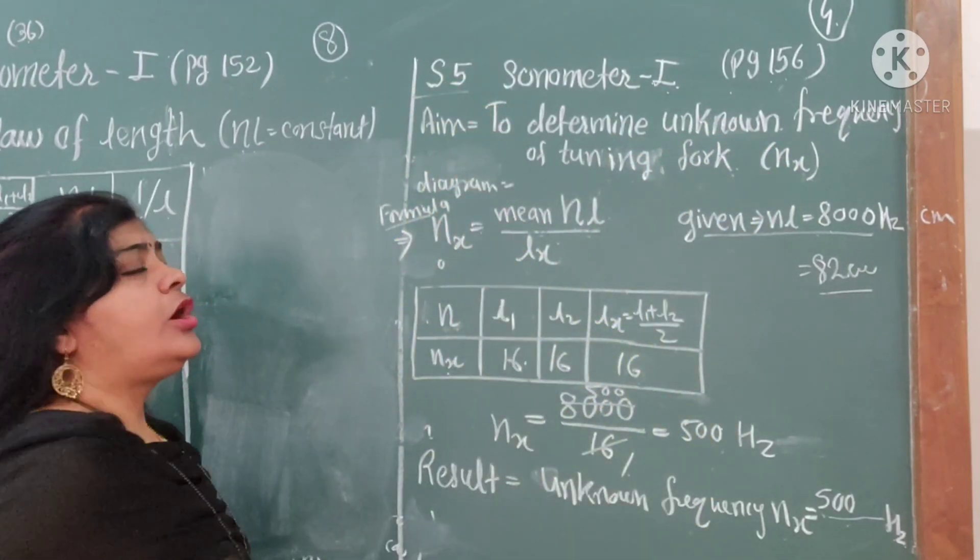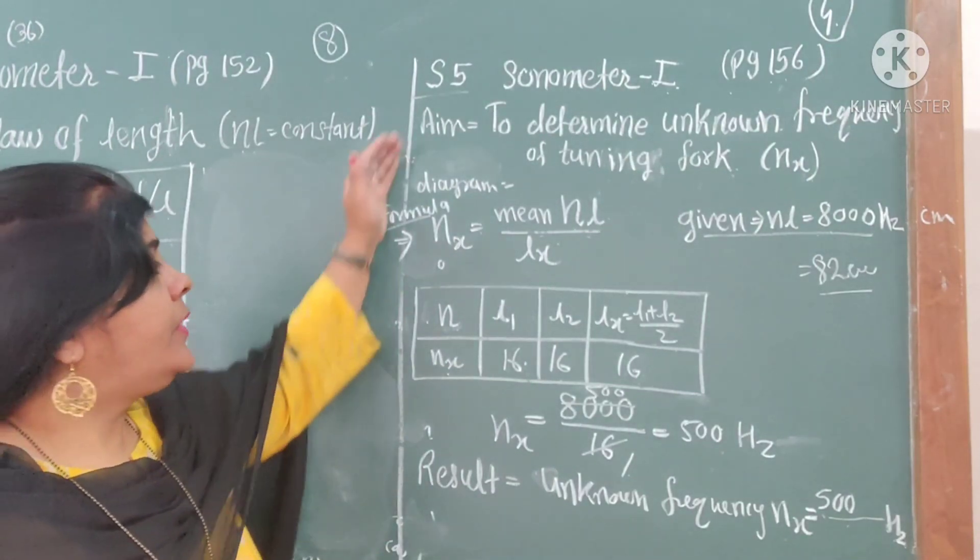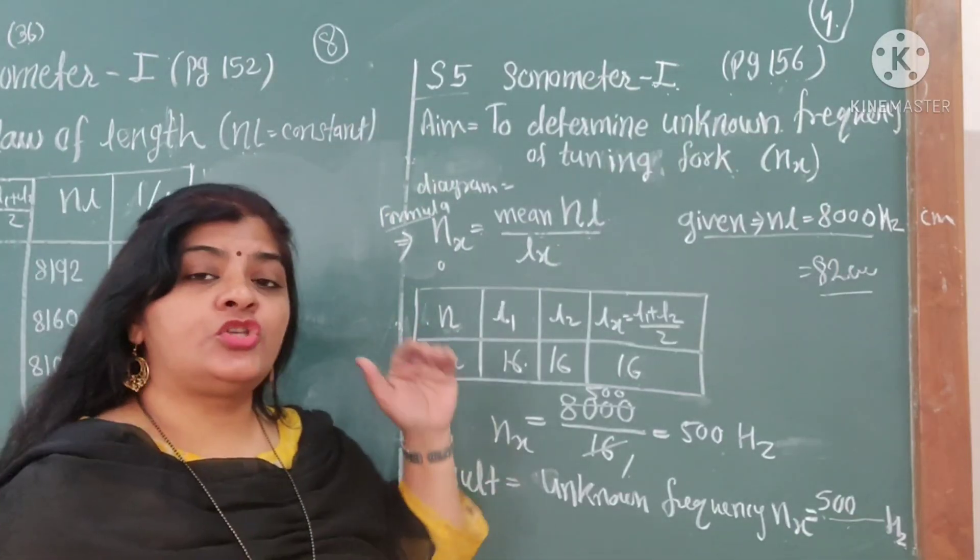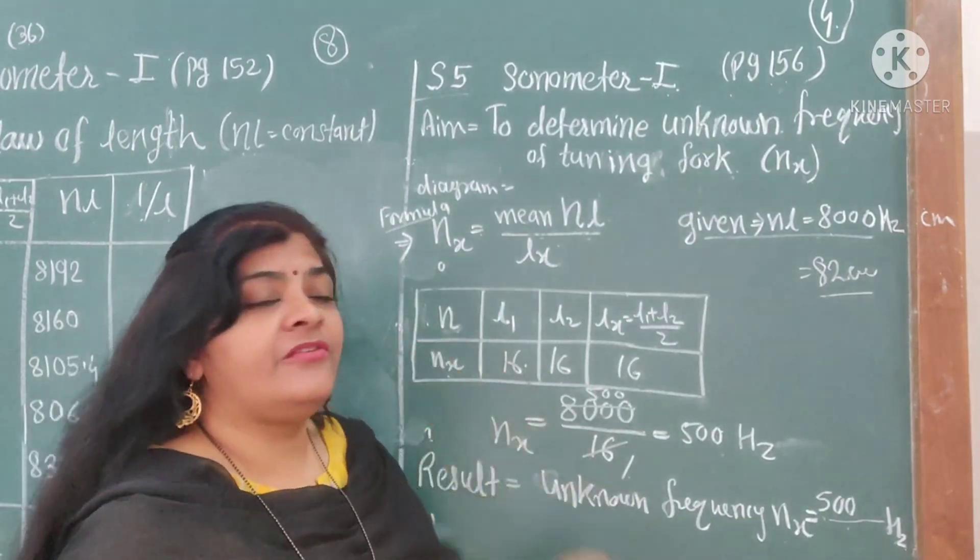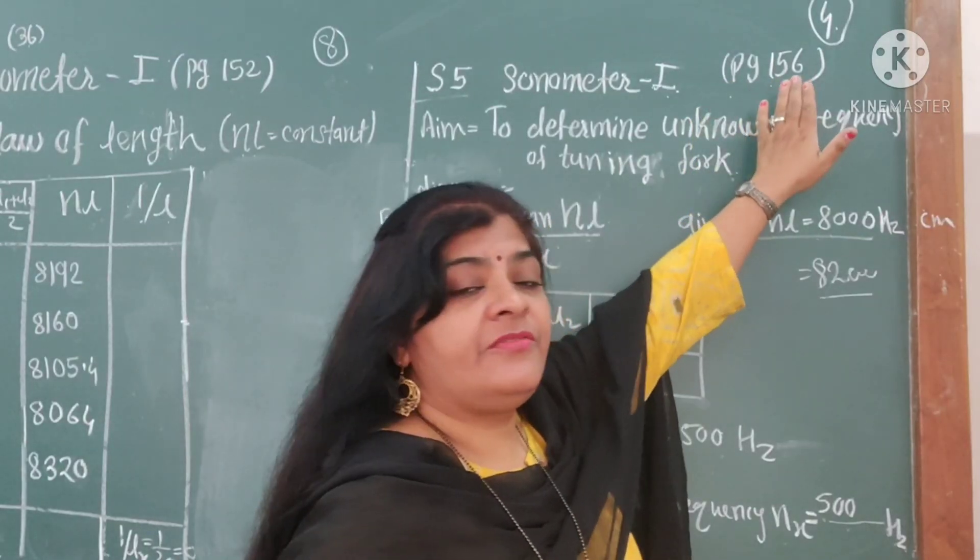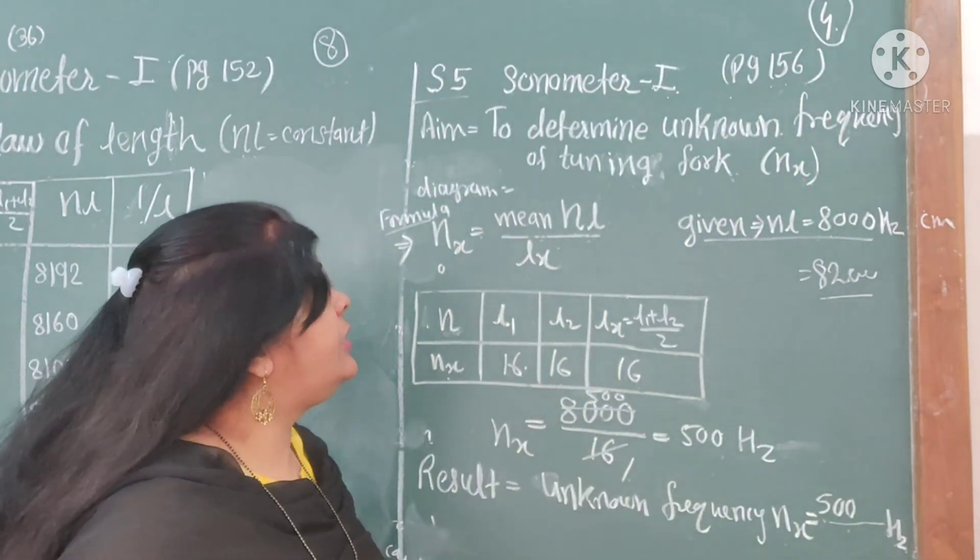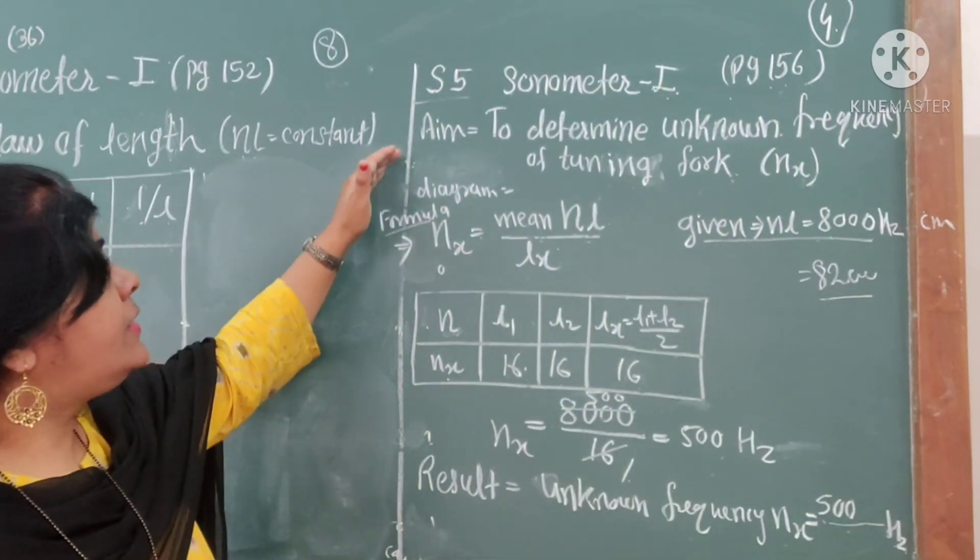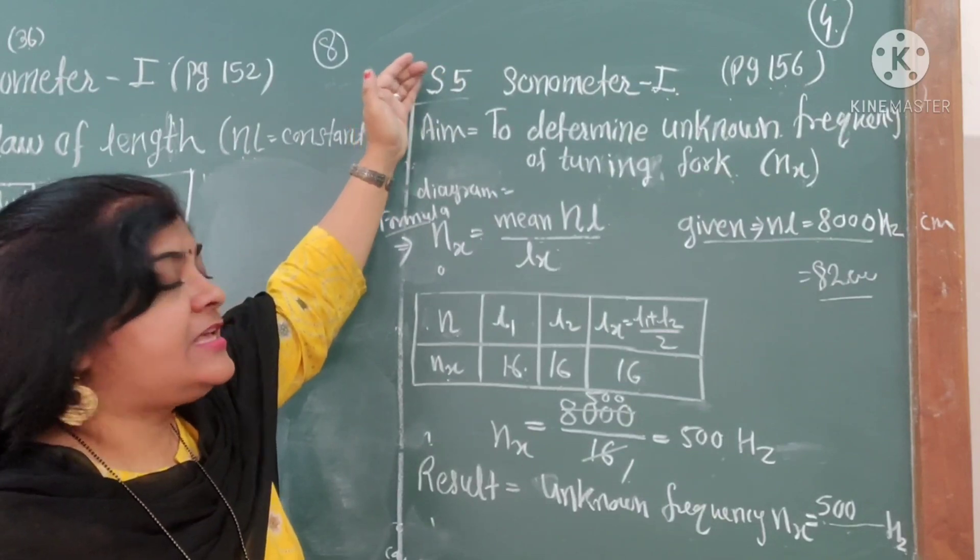This is the short question S5. Here I am explaining which is on page number 156. On page 156, the boat slips are given for Sonometer 1, and the short experiment number is 5.